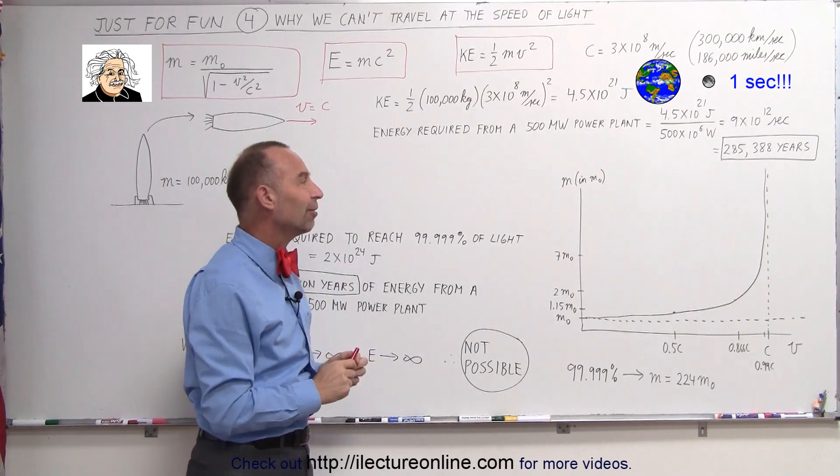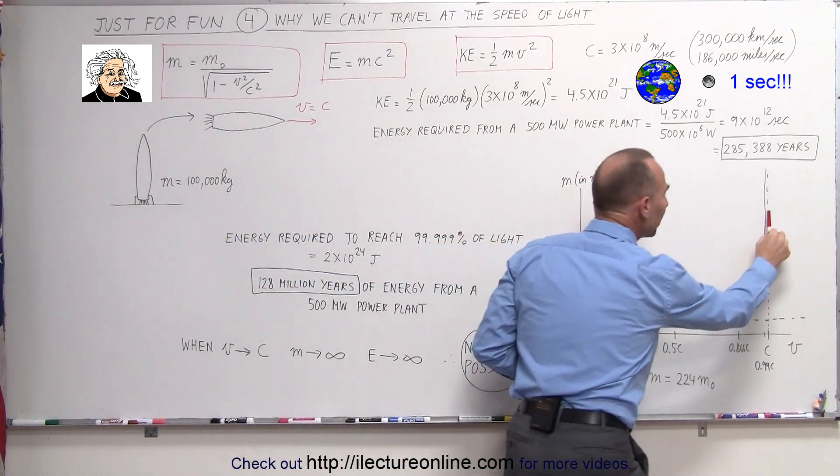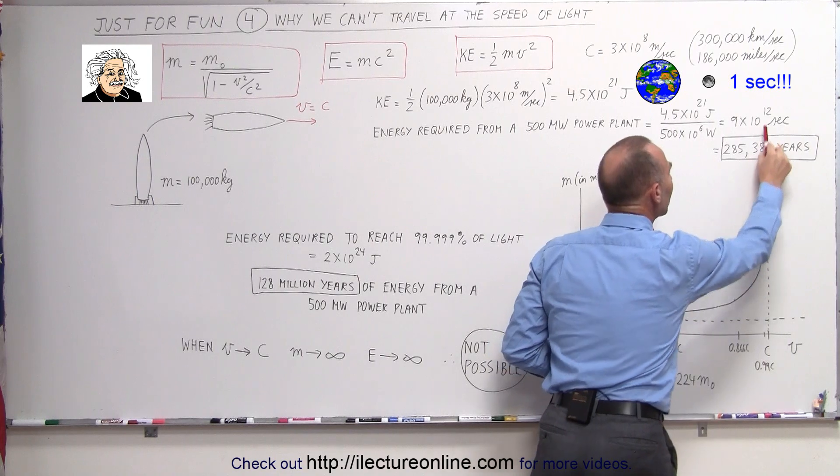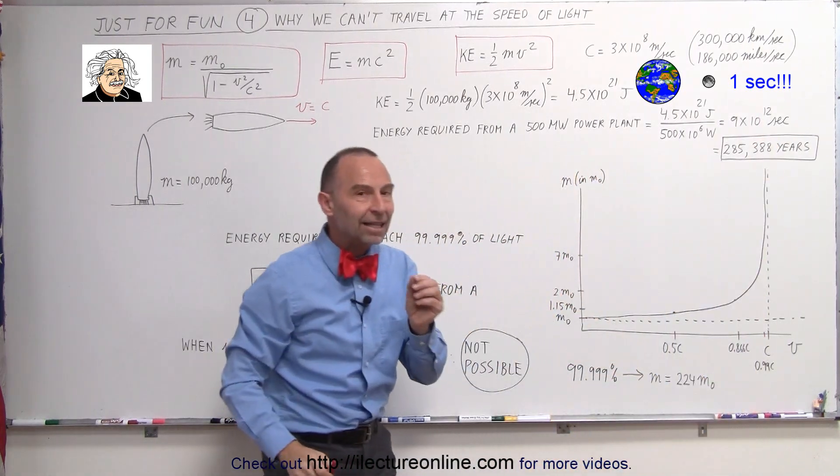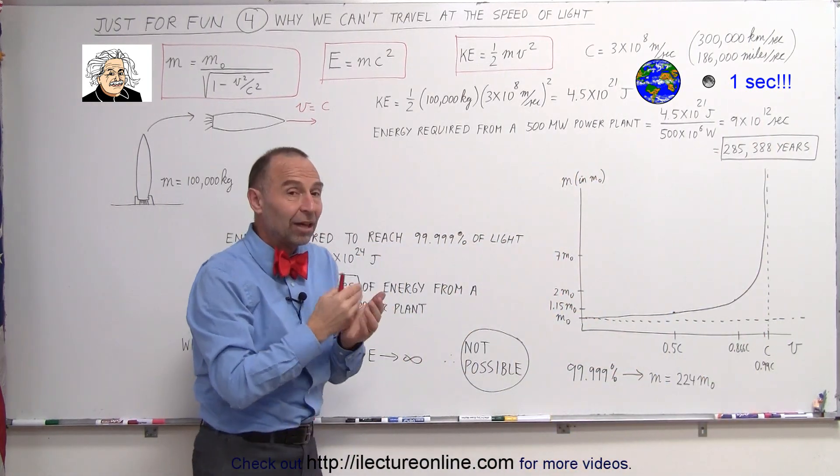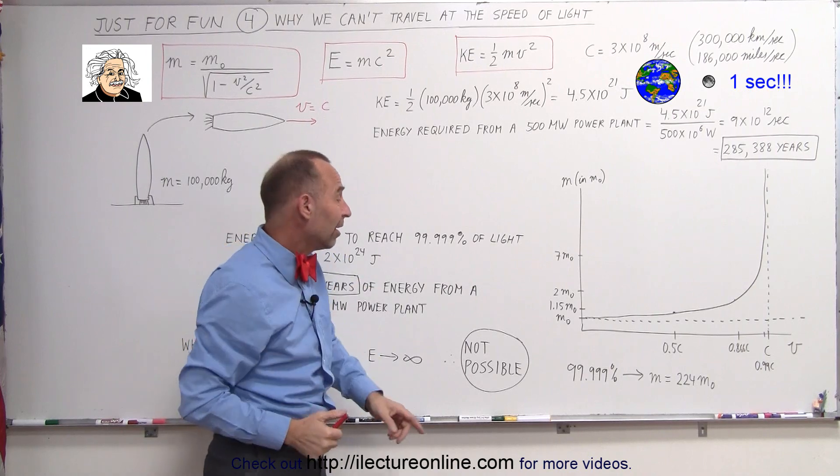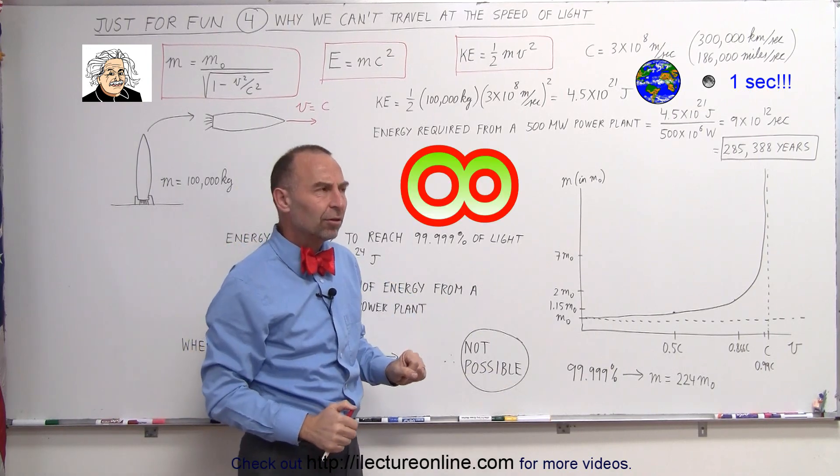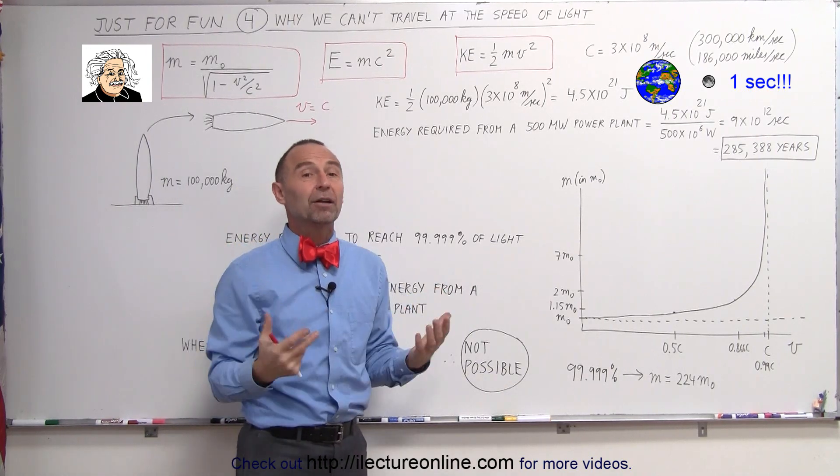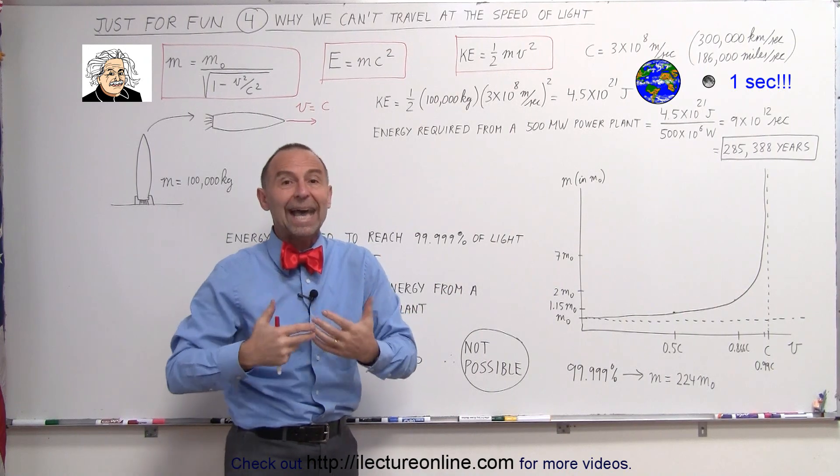To get to the speed of light, the mass would just continue to increase, and finally in the limit, as the speed reaches the speed of light, the mass would now become infinite. Infinite mass would mean an infinite amount of energy, which means you simply can't get there.